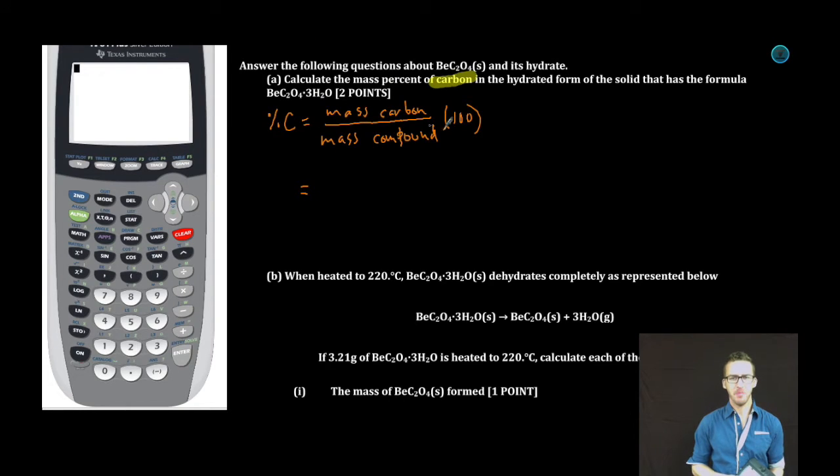Easy enough, mass of the carbon. As I scan my formula here, I recognize that I only have two carbons. So it's going to be two times the molar mass of carbon, or 12.01. And then the party gets real.